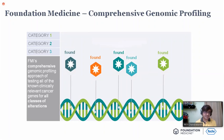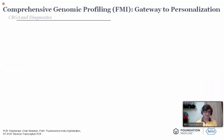This is how Foundation Medicine's CGP works — it is a genomic profiling approach of testing all of the known clinically relevant cancer genes for all classes of alterations. This is how FMI picks up mutations.